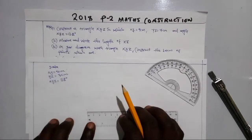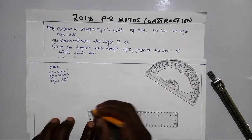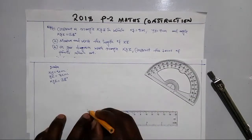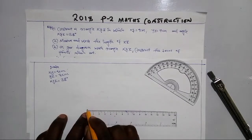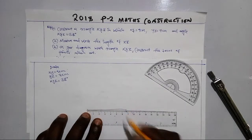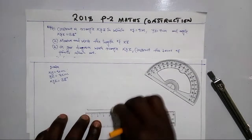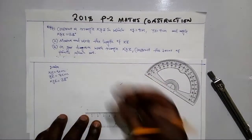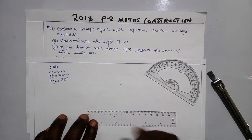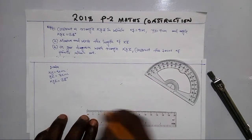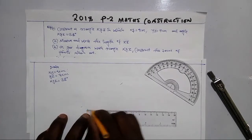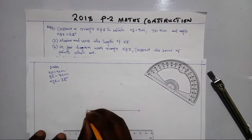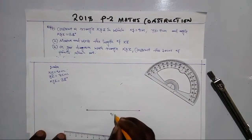Measure 9 centimeters from zero to nine on your ruler. You measure from this point up to this point, which is 9 centimeters. This is our 9 centimeters line.